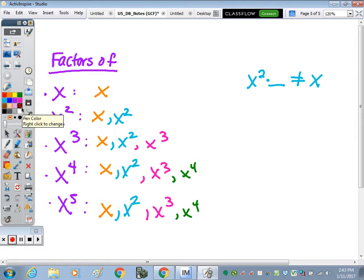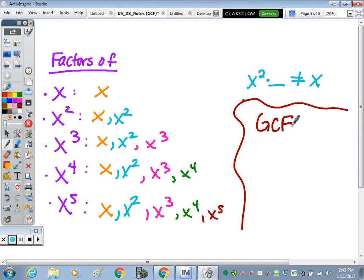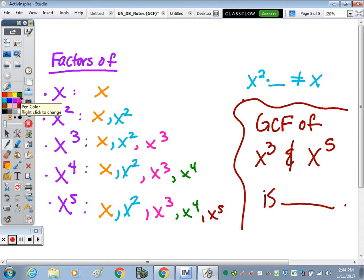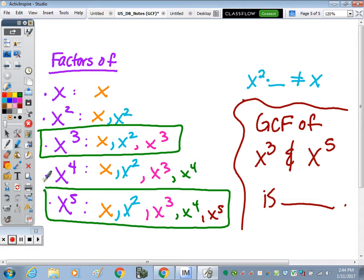So over on the side, what is the GCF of x to the 3rd and x to the 5th? What's the GCF of x to the 3rd and x to the 5th? This row and this row. X cubed. Yeah. Good. Thank you for those raising your hand. So x cubed is the greatest common factor. It will always be the term with the lowest exponent. So 3 is smaller than 5. So that's going to be x cubed, the greatest common factor.